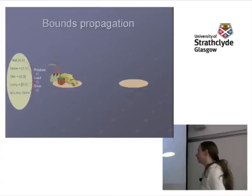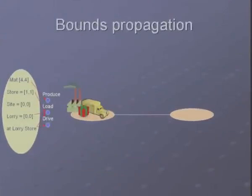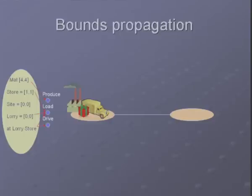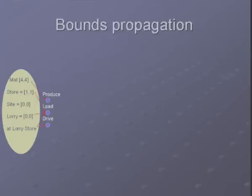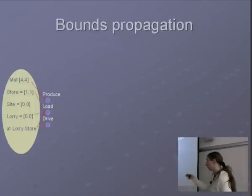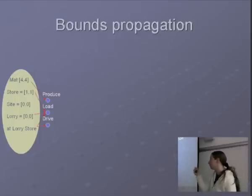Here's our little running problem we're going to be using through the lecture. There is a lorry at a store. 'Mat' stands for material — we have four units of material, one package at the store, no packages at the site, no packages in the lorry, and the lorry is at the store. Our goal is going to be to get a number of packages at the other location — at the site. When we build a relaxed planning graph, the initial bounds are: we know what the values are from the initial state — four units of material, one package at the store, nothing at the site, nothing in the lorry. So the bounds give us the exact value: lower bound is four, upper bound is four for material, for example.